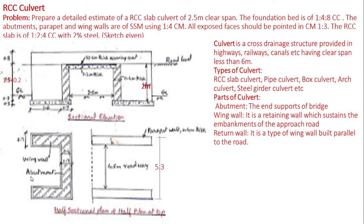The wing wall is a retaining wall which supports the embankments of the approach road. There are three types of wing walls: splay type, straight type, and return type. In the figure, a return type wing wall is provided, built parallel to the road bed. Bed concrete in foundation is provided for both abutment and wing wall. The thickness of bed concrete is 0.3 meters, depth of abutment below ground level is 0.3 meters, total height of abutment is 2 meters, and height of parapet wall is 0.8 meters. Size stone masonry is used for both abutments and wing walls. There are six items in the estimate.